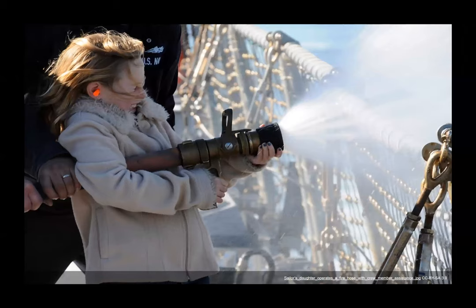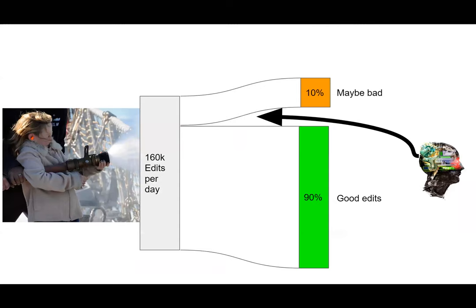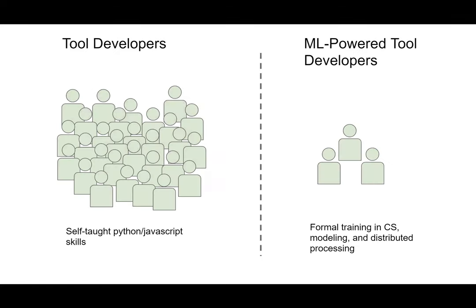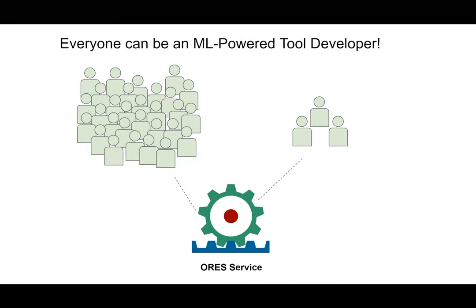Machine learning has become an important infrastructure for Wikipedia because of the way that it enables processes to scale to the firehose of activity that is the world's largest encyclopedia. ORS is designed to broaden access to these machine learning technologies. As an intervention, ORS provides access to high performance and high fitness machine learning models but does not direct developers on how to use them.